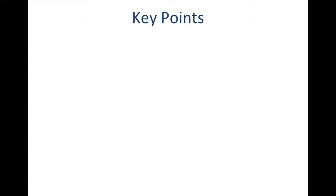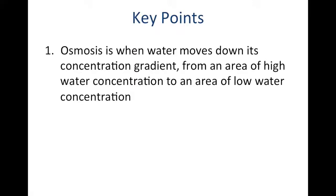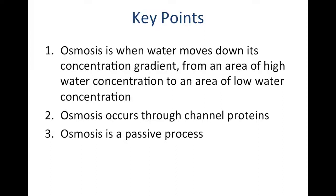The key points to know about osmosis: osmosis is the diffusion of water. It is when water moves down its concentration gradient from an area of high water concentration to an area of low water concentration. Osmosis occurs through channel proteins, and these channel proteins are known as aquaporins. Osmosis, the movement of water, is a passive process because water moves down its concentration gradient in order to equalize water concentrations on two sides of the cell. This is osmosis.